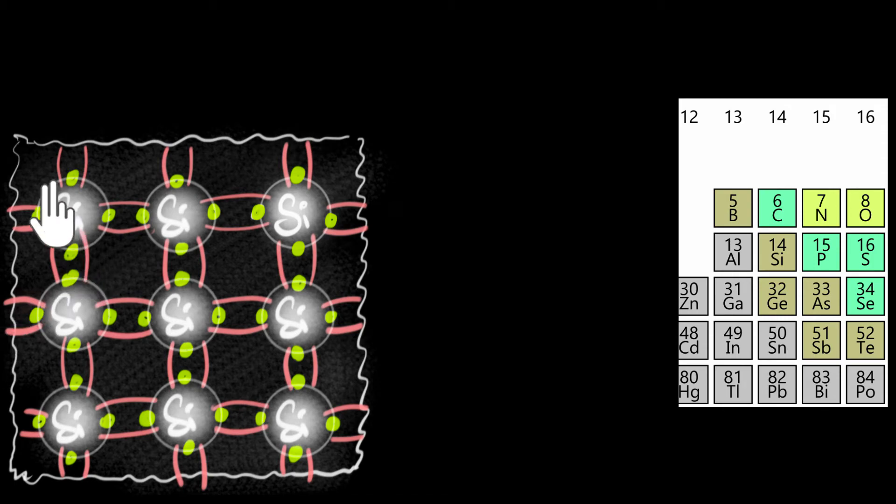In a previous video, we saw that if you take a pure semiconductor and add group 15 elements like nitrogen or phosphorus, because of five valence electrons—one extra electron compared to silicon—at room temperature, these phosphorus atoms end up donating those extra electrons. Our entire semiconductor now has a lot more electrons, a lot more negative charge carriers compared to holes, resulting in what we called an n-type semiconductor.